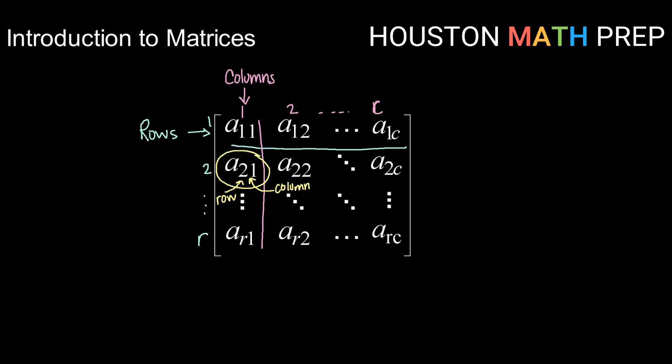In general, any given entry can have the form A_R_C, kind of like ARC, which can help you remember. R stands for what row the entry is in, and C stands for what column the entry is in.